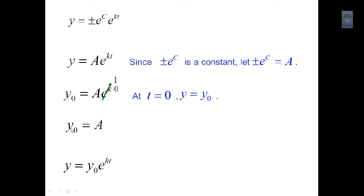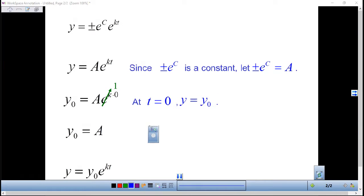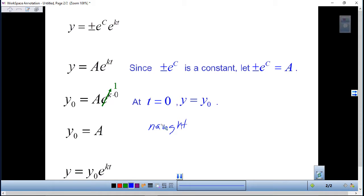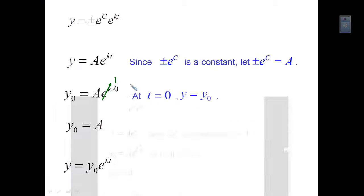You're going to hear the starting value referred to in a lot of different ways: y original, the original value for y, the beginning value of y, or what's called y naught — spelled n-a-u-g-h-t — which is just another way of saying y sub zero. So we end up with the equation y equals the original value for y times e to the kt.